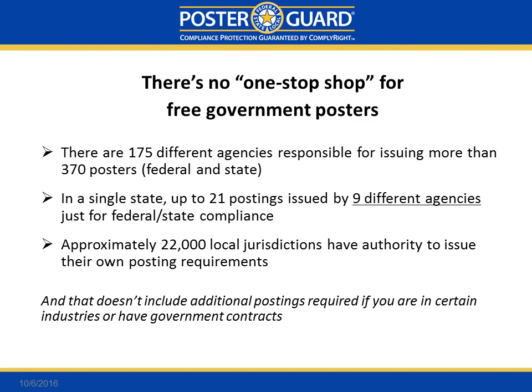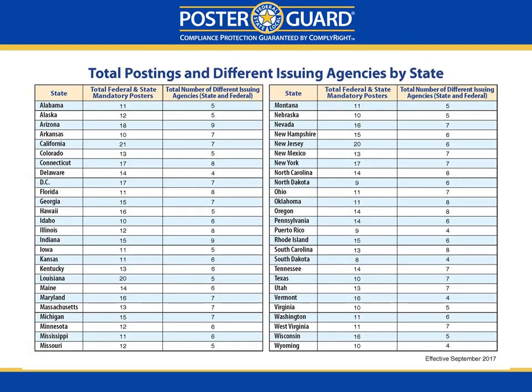So this chart just shows at a glance how many different posters are required in each state. And again, this is just your federal and state postings. The total number of federal and state posters state by state is listed in the left column. And then in the right-hand column, it shows how many different agencies are responsible for issuing those posters — how many agencies or websites you have to go to in each state just to get your basic federal and state posters for compliance. And of course, these numbers are much higher when you include city and county posters, industry-specific posters, and federal contractor posters.